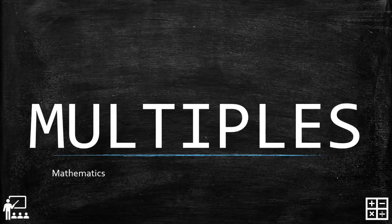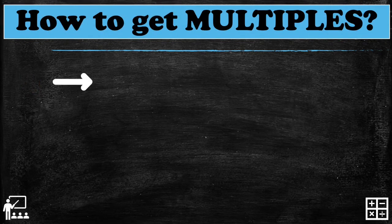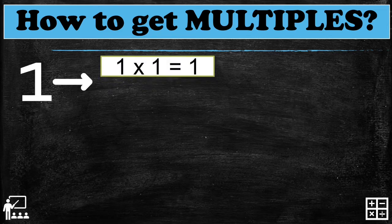This video lesson is about multiples. What is a multiple? It is the product — the result of one number multiplied by another number. The operation we're going to use is multiplication. I have here an example: a number one, and we're going to multiply it by another number to get the product, which is called the multiple.